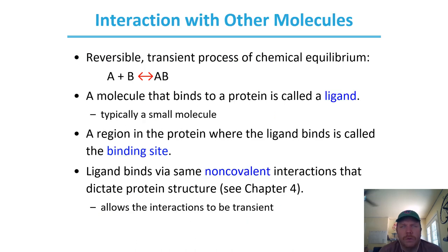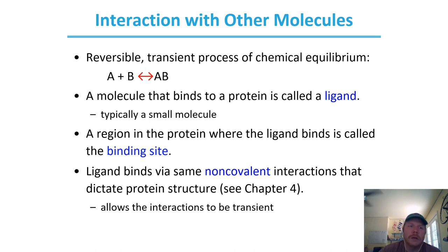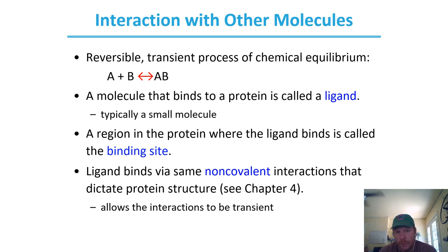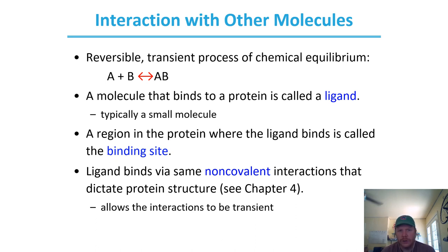The first thing you want to do when talking about the function of a protein is discuss their interactions with other molecules. First and foremost, that interaction is reversible — this is a transient process with a chemical equilibrium of A plus B yields AB. A molecule that binds to a protein is called a ligand, typically a very small molecule. The region of the protein where the ligand binds is called the ligand binding site, and these bind via non-covalent interactions, which is what allows these interactions to be transient.